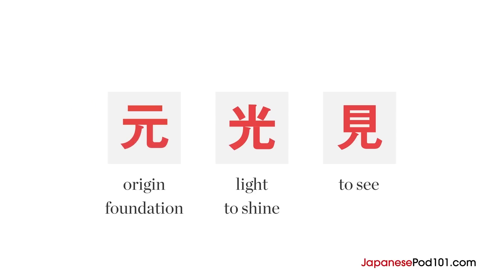The second kanji has the legs on the bottom once again, with what appears to be a fire burning on top. Fire evokes light, so the meaning of this kanji is light. And the foundation or origin of the emitting rays refers to the point source. Light emanating from a source means that it's shining, so this kanji can also mean to shine.